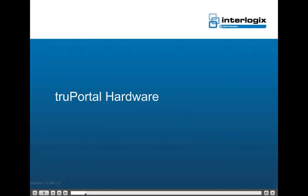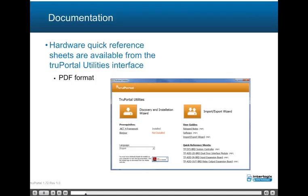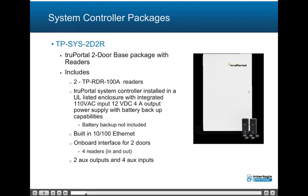This topic will cover the TruePortal hardware. Hardware quick reference sheets are available from the TruePortal utilities interface in PDF format. TruePortal is distributed in packages and add-on modules. The TPSYS2D2R TruePortal 2-door base package with readers includes two TPR-DR100A readers and a TruePortal system controller installed in a UL-listed enclosure with integrated 110V AC input, 12V DC 4A output power supply with battery backup capabilities. Note that the backup battery is not included. Features include built-in 100 Ethernet.